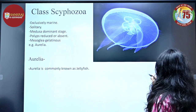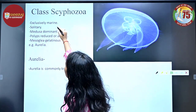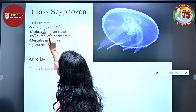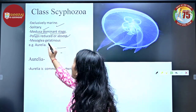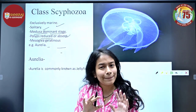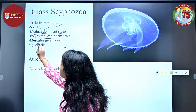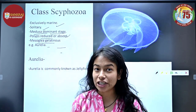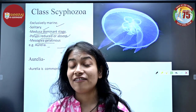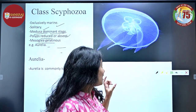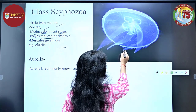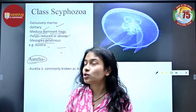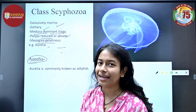Class Scyphozoa: members are exclusively marine and solitary in nature, with the medusa stage dominant. Polyps are reduced or completely absent. Because of their very gelatinous mesoglea — which gives them a jelly-like appearance — they are called jellyfishes. Aurelia, commonly known as moon jelly, belongs to Class Scyphozoa of Phylum Cnidaria.